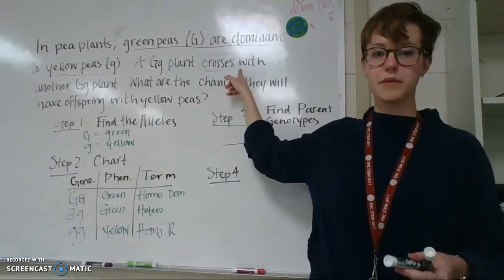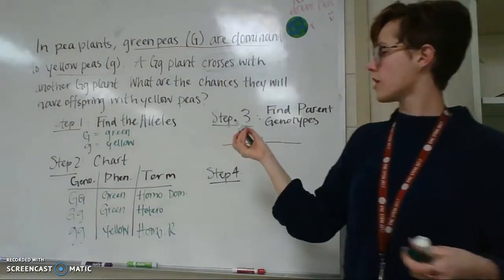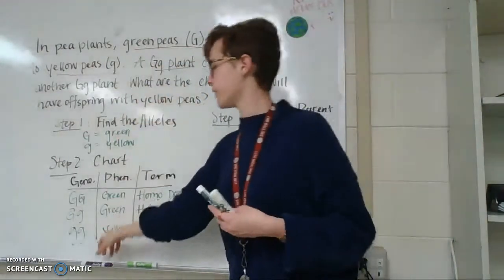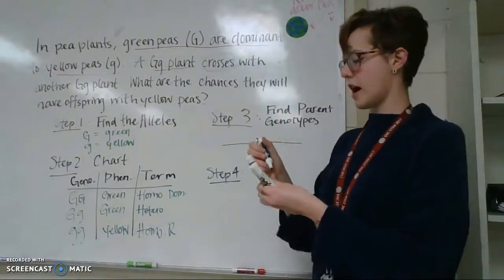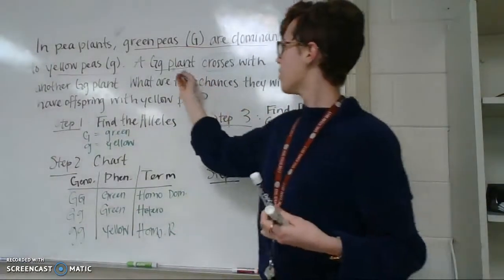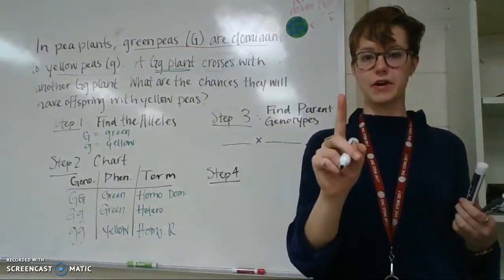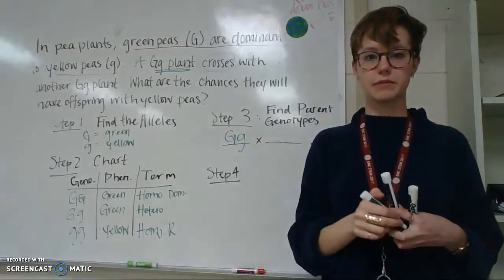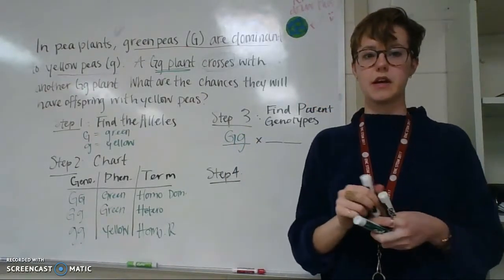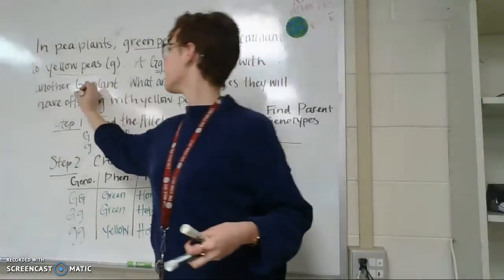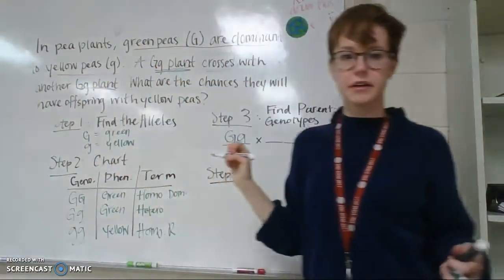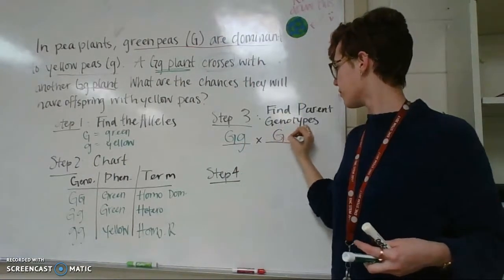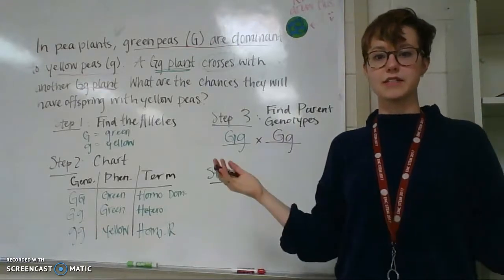So in this problem, it says that we're crossing a GG plant with another GG plant. So here's what I do. We have one GG plant here. That's one parent. So I'm going to write that in one blank. Then we have another GG plant. That's our second parent. I'm going to write that right here. And that's it.